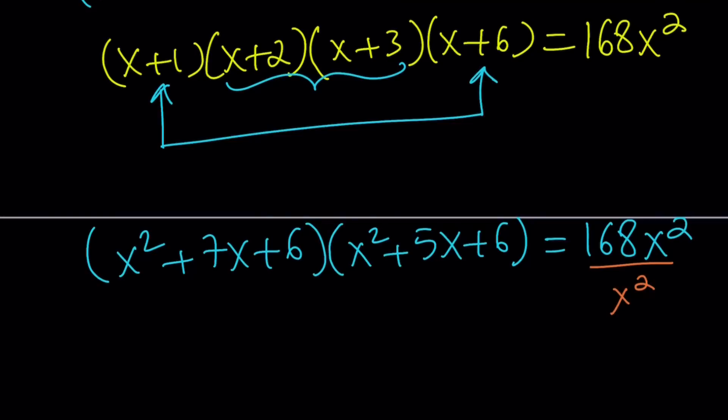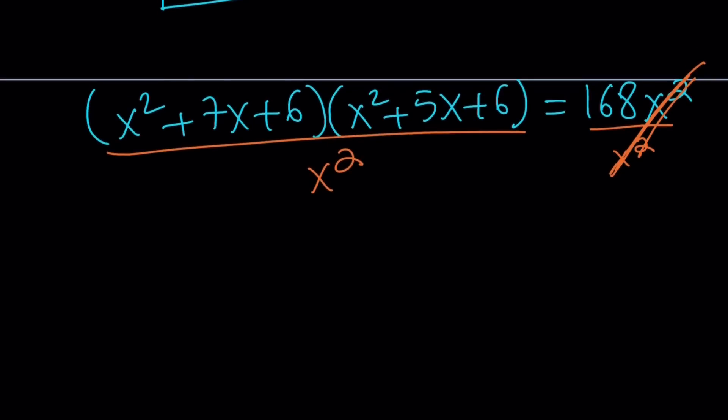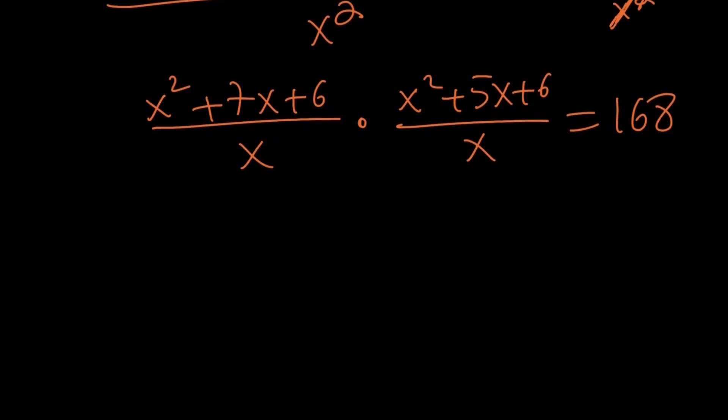So let's go ahead and do it. Divide by x squared, divide by x squared. Obviously, this is going to give us a nice result, but what about the left-hand side? How do you divide a product by x squared? Easy. You divide each factor by x because x squared is x times x. So you can split this up into x squared plus 7x plus 6 divided by x, multiplied by x squared plus 5x plus 6 divided by x, and that's equal to 168. Notice how we broke it down. When you multiply these two, you're going to get what we had before.